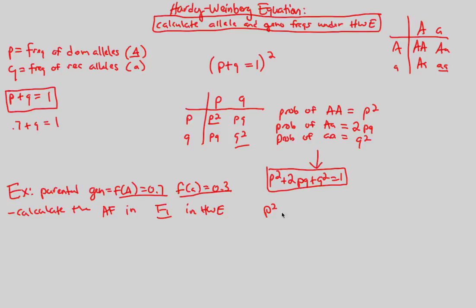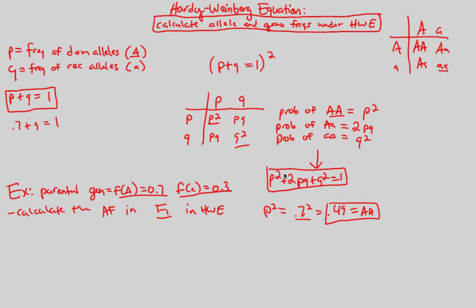P squared equals 0.7 squared, which equals 0.49. P is 0.7 because the frequency of the dominant allele capital A is 0.7. P squared represents the genotype capital A, capital A, so 0.49 — that is 49% — represents the frequency of the homozygous dominant genotype.